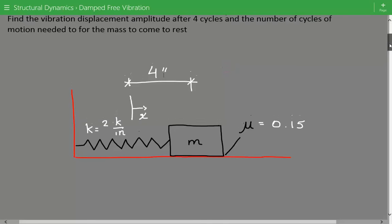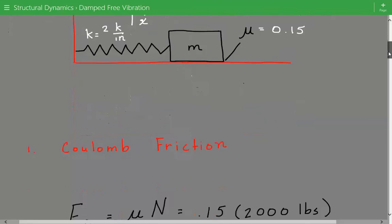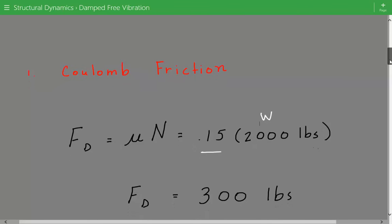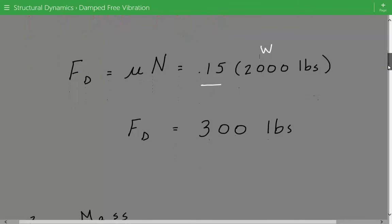And now coming back to our damp free vibration problem. The first step is to calculate the Coulomb friction force and that's equal to the coefficient of friction multiplied by the normal force on the contact surface. So our coefficient of friction is equal to 0.15 and the normal force on the contact surface is simply equal to the weight of the mass which is W and that's 2 kips. So our Coulomb friction force is equal to 300 pounds.